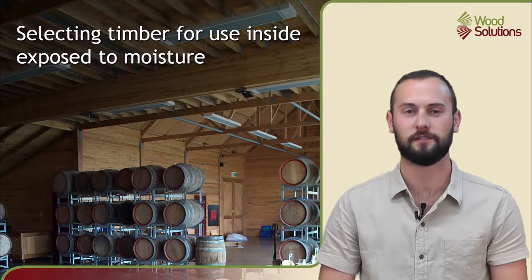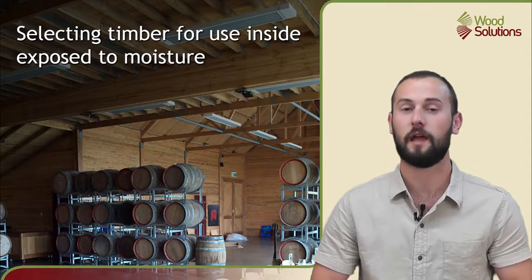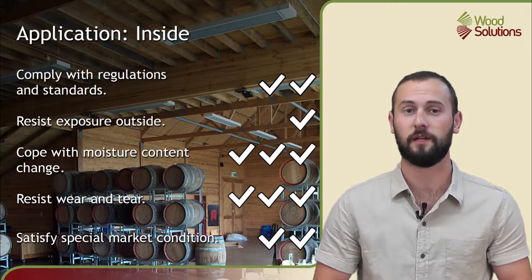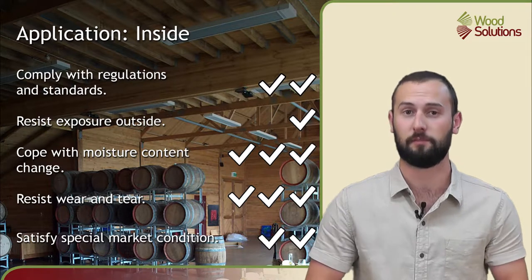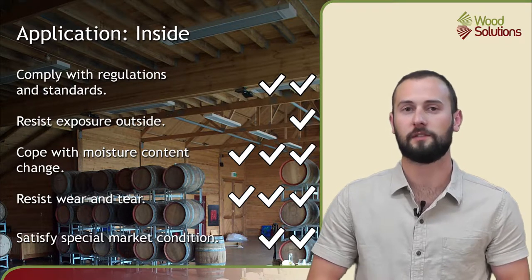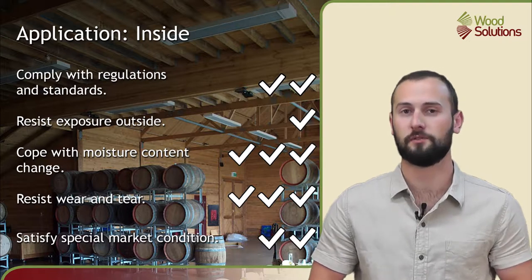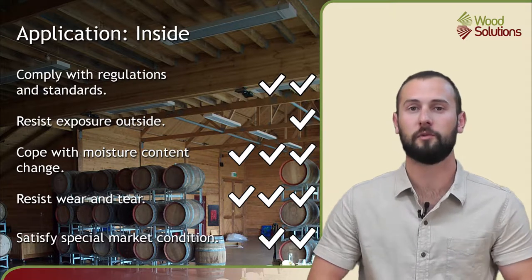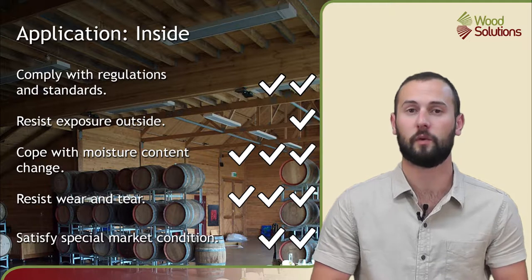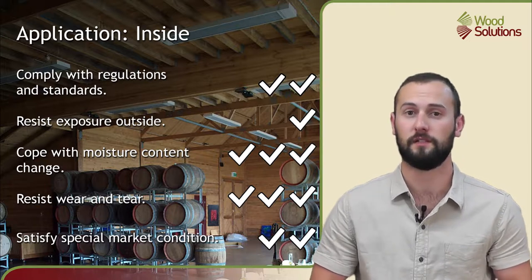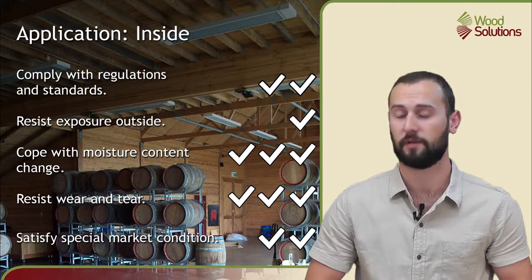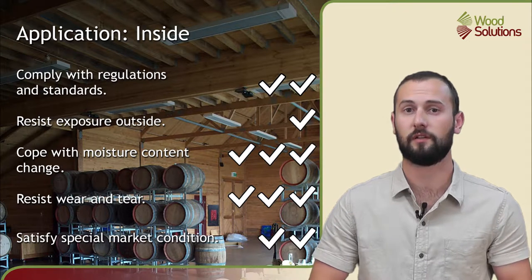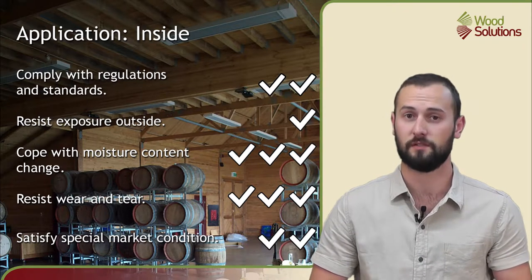Welcome to this Wood Solutions campus presentation on selling and supplying timber and wood products that are fit for purpose in an internal application. This table is from an earlier presentation and shows the importance of key performance requirements for internal applications. Internal applications are those where the timber is sheltered but still exposed to changing moisture conditions in building. Changing moisture conditions and regulations around this are discussed in detail in this presentation.